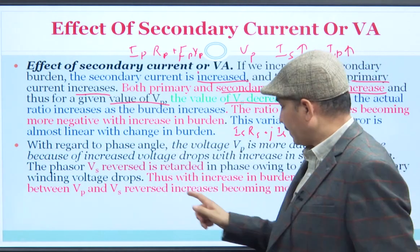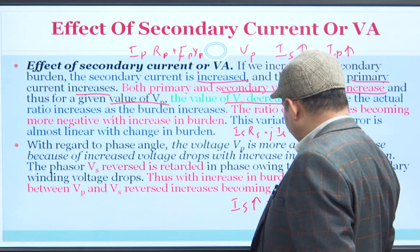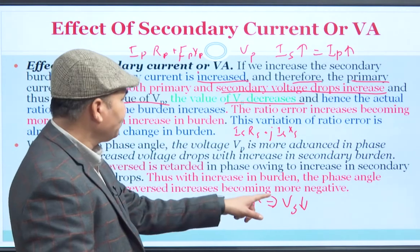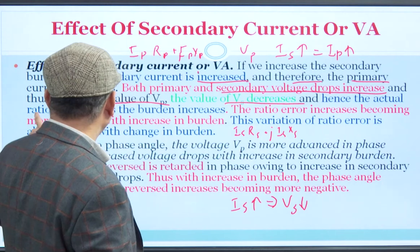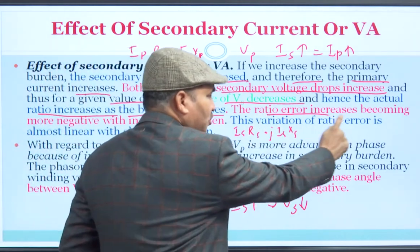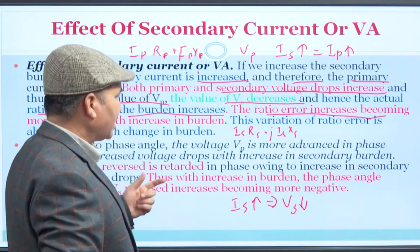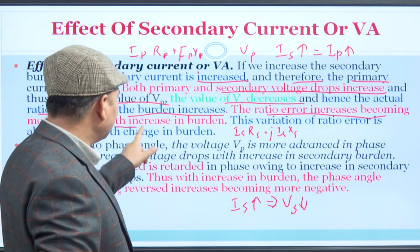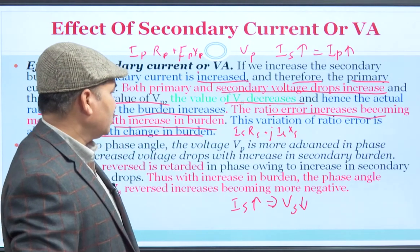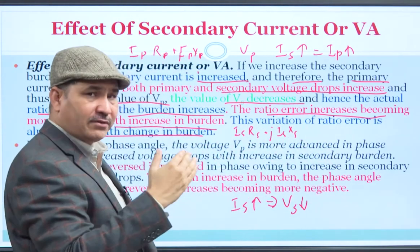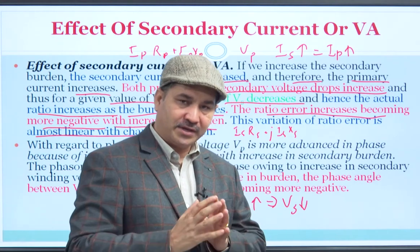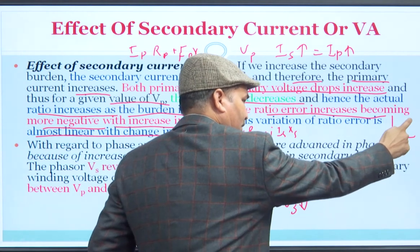With the increase in Is, it will lead to decrease in Vs, because Vp is fixed. So Vs will decrease, and hence the actual ratio R increases as the burden increases. The ratio error (R minus N) will also increase and become more negative as burden increases. This variation of ratio error is almost linear with the change in burden — as your burden increases, your ratio error increases proportionally. Therefore, unnecessarily large burden on the secondary should be avoided.